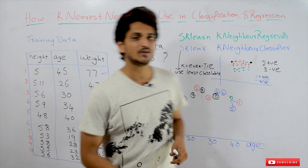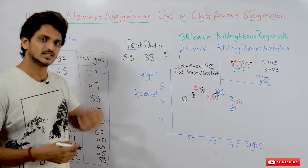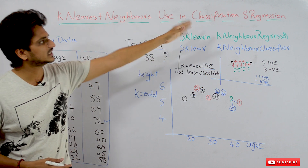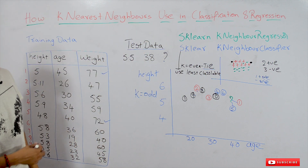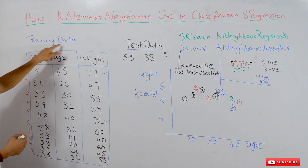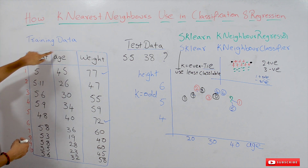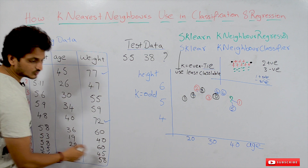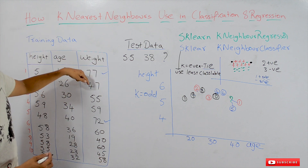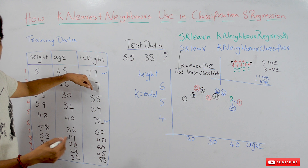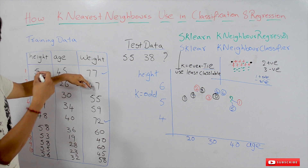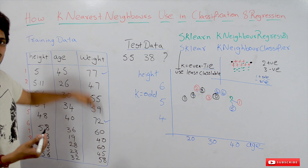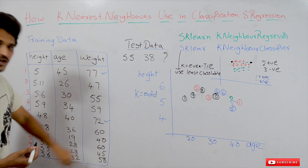Coming to our class, the same example dataset we considered in our last class is being used here for explanation of how K-Nearest Neighbors is used in classification and regression datasets. This is our training dataset. It has two inputs: height and age, and weight is the output. Since the weight value is a continuous value, this dataset is a regression dataset. As discussed previously, if you are having continuous values, we call it a regression model.